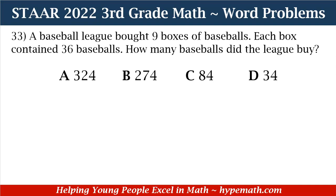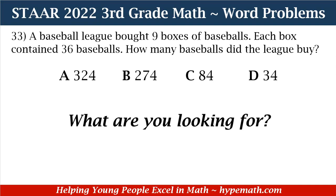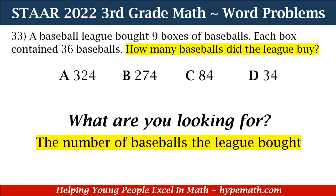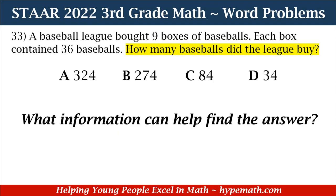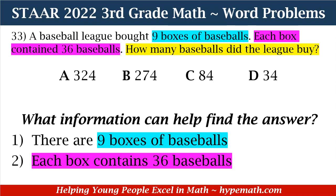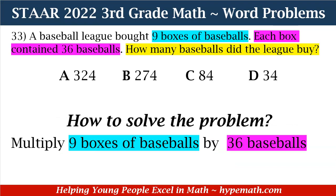In order to solve this problem, the first thing we're going to do is ask ourselves, what are we looking for? We are looking for the number of baseballs the league bought. Now that we know what we're looking for, we need to discover what information can help us find the answer. There are two things: one, there are nine boxes of baseballs, and two, each box contains 36 baseballs. Since we know there are nine boxes and each box has 36 balls, and we're trying to find the total, we need to multiply.